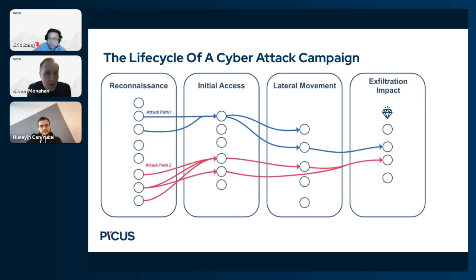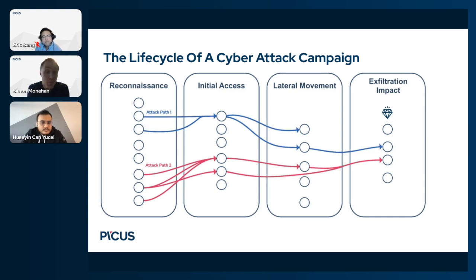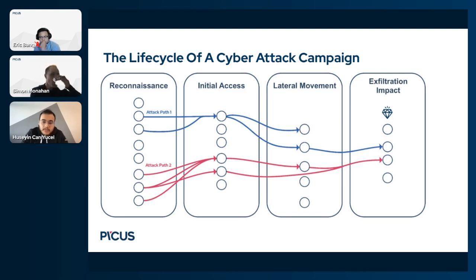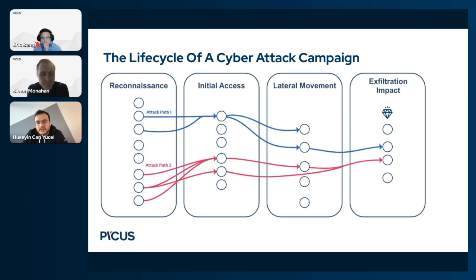Breaches are an operational reality, so the key is being able to restrict an attacker once they've achieved initial access to prevent a breach from becoming a serious business-impacting incident. In large networks with hundreds or thousands of users and hosts, a breach doesn't mean the impact would be significant without lateral movement. The impact of a cyber attack can be measured by the number of compromised systems and the criticality of the compromised data. If adversaries are stopped before fully compromising the network, the impact is diminished significantly — limiting their movement has a great chance to prevent a breach from becoming a major incident.